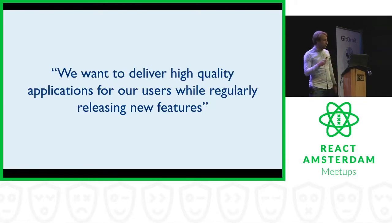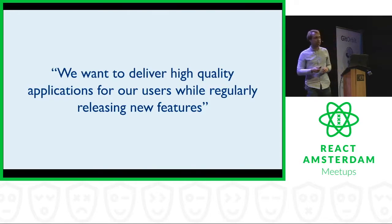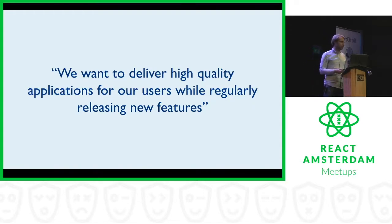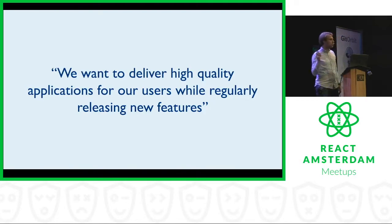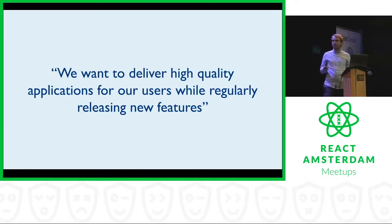What do we want at ANWB? Our stakeholders want us to deliver high-quality applications for our users while regularly releasing new features — which is basically what every one of your stakeholders wants from you. So nothing new there. But how do you do that? How do you get to the point where you can deliver high quality and still keep a nice pace with delivering new features? One of the things you can do is to have a codebase with a lot of tests.